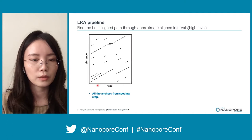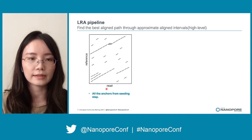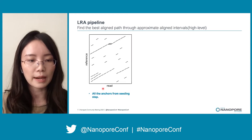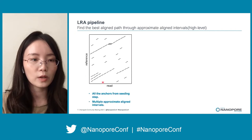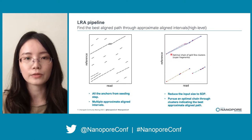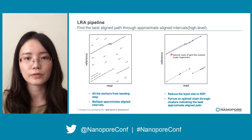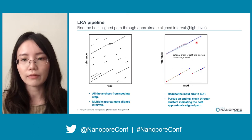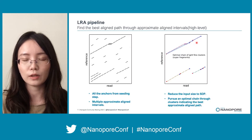After we get the set of all anchors from the seeding step, one option is to feed all anchors to SDP to get the optimal chain. However, this is very inefficient and time consuming, so we must limit the input anchor size to SDP. We notice that there are multiple approximate aligned intervals in the figure of these exact matches. So what LRA does is find the best aligned paths through those approximate aligned intervals and only pass anchors on this path to SDP to get the optimal chain of anchors. This effectively reduces the size of the input anchors to SDP.